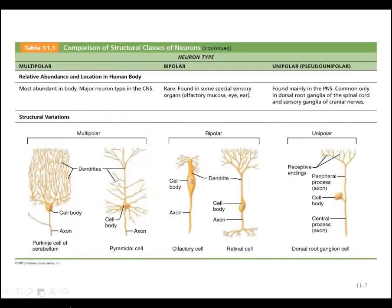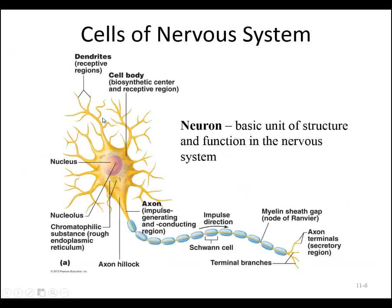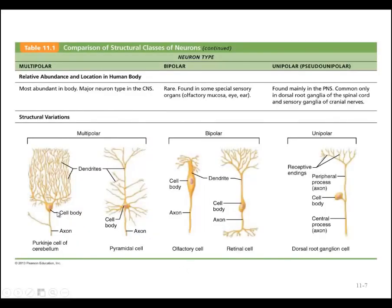Not all neurons look the same. The neuron we just examined is called a multipolar neuron. We name neurons by looking at the cell body and counting how many extensions come off it. Here we can see many dendrites and an axon extending away from the cell body — therefore it's multipolar. This is the most common type of neuron found in the body.